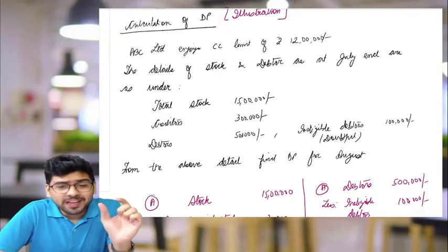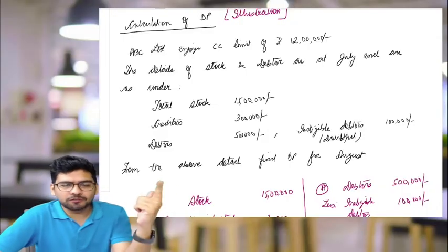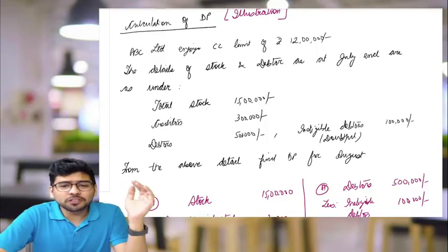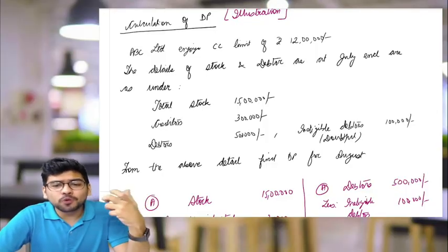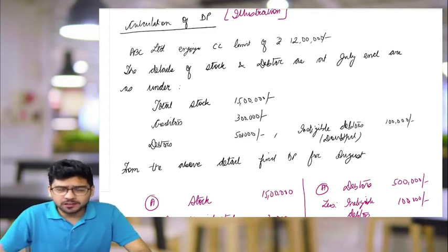12 lakhs. This 12 lakhs is the sanction limit for the CC which has been granted by the bank to ABC Limited. Now the details of stock and debtors at the end of July are given as under. For the month of July they must have given the bank their